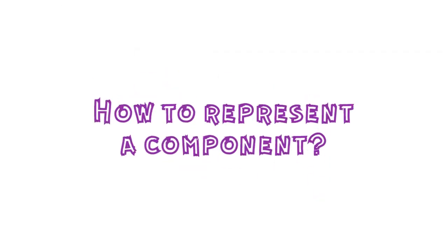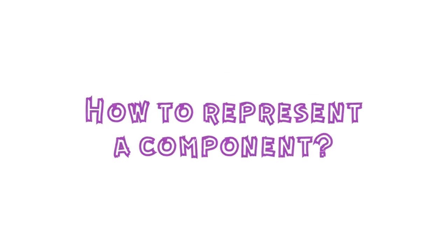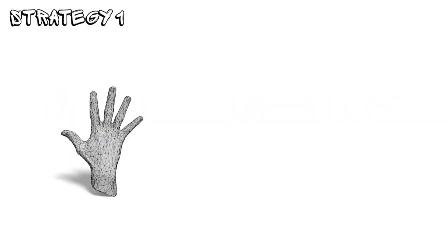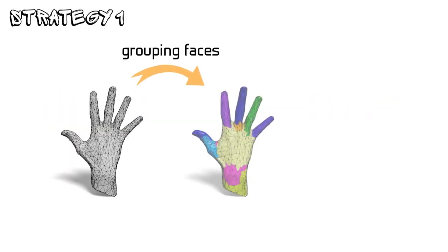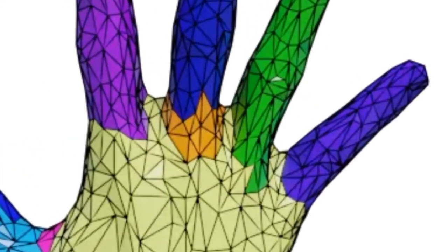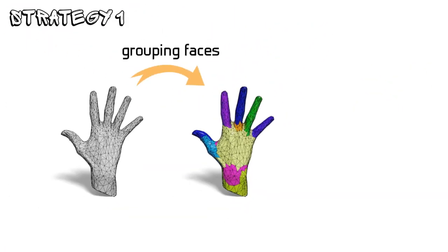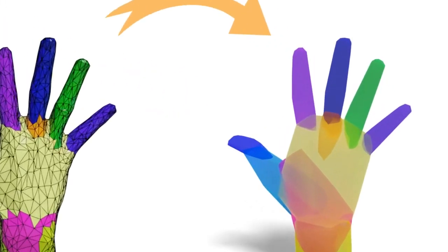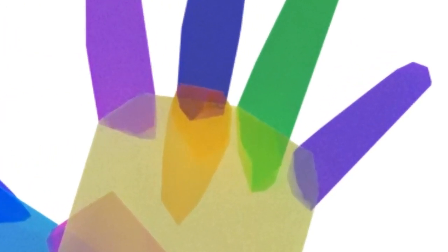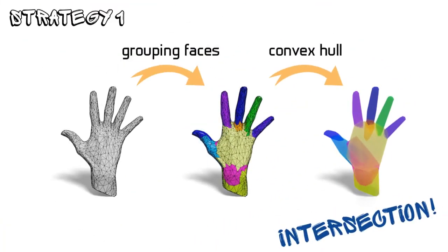The second problem is how to represent a component and decompose a shape. Some prior works preserve the triangle faces of the input mesh and decompose the shape by grouping the triangle faces. They often output components with zigzag boundaries. As a result, the convex hulls of the decomposed components usually intersect with each other, which is undesirable in many downstream applications.